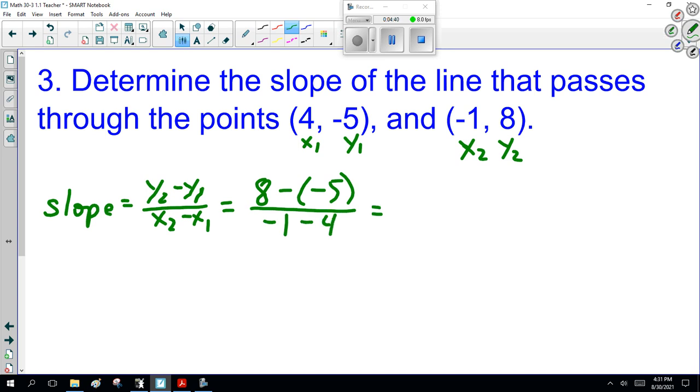y2 is 8 minus y1 which is -5, over x2 which is -1 minus x1 which is 4. This one's a little sneaky. Minus minus 5 is plus 5. 8 plus 5 is 13. Minus 1 minus 4 is minus 5. 13 over minus 5, that should be minus 2.6. I'm happy with either answer.